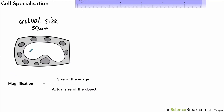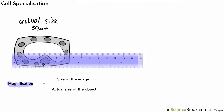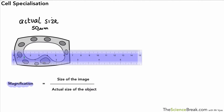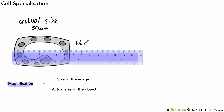Now let's look at a biology example. Here we've got a cell, we've got our formula, and we're told that the actual size of the cell is 50 micrometers — that's given in the question. We need to work out the magnification, so we measure the size of our image. Looking carefully, that's 66 millimeters for the size of the image.